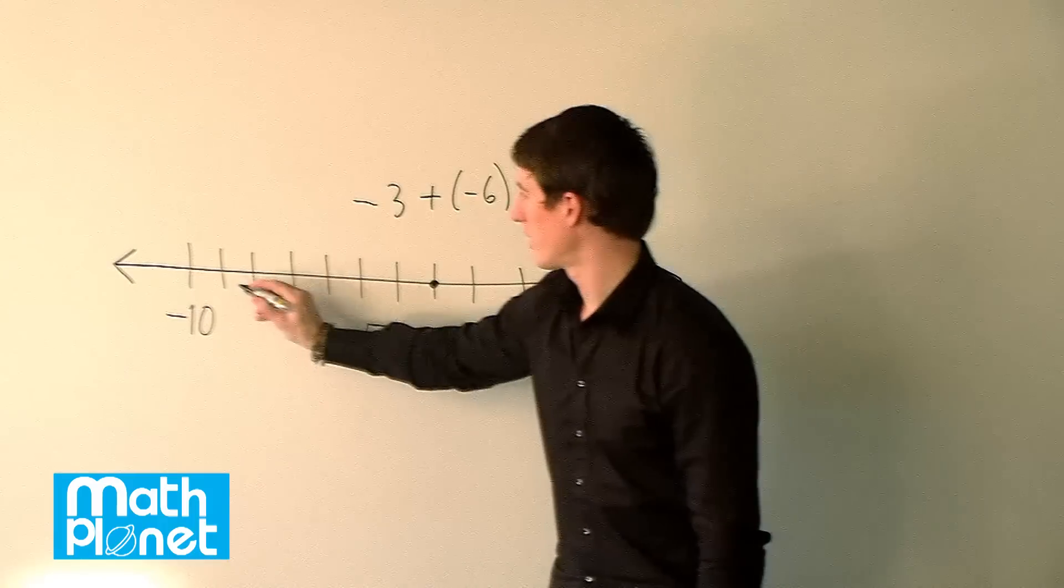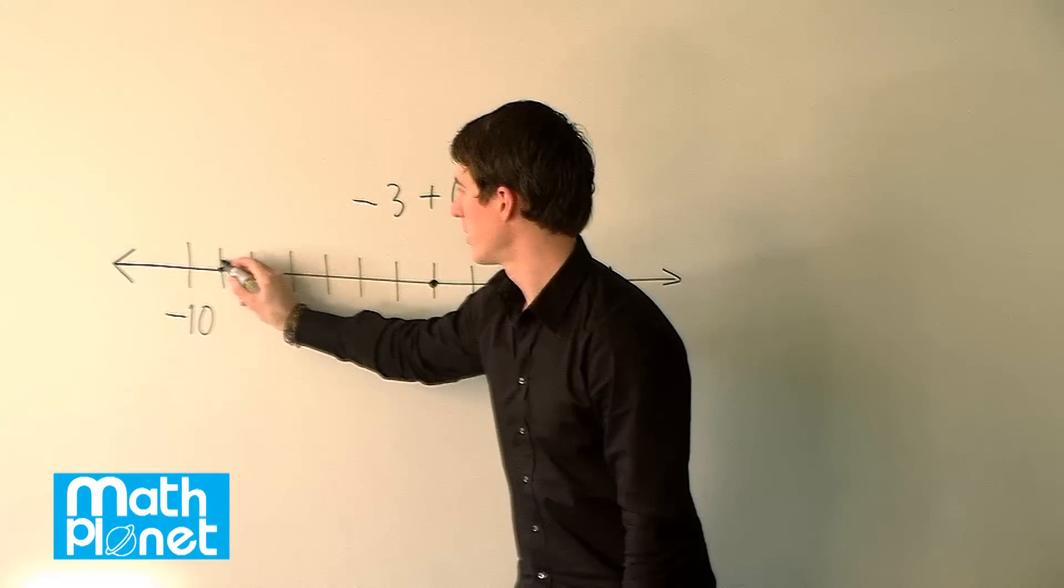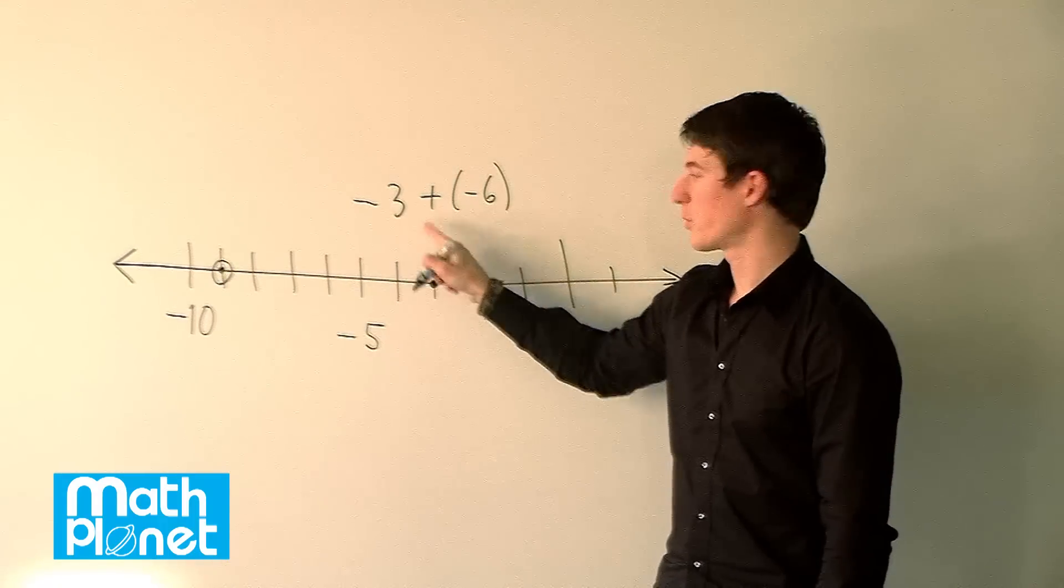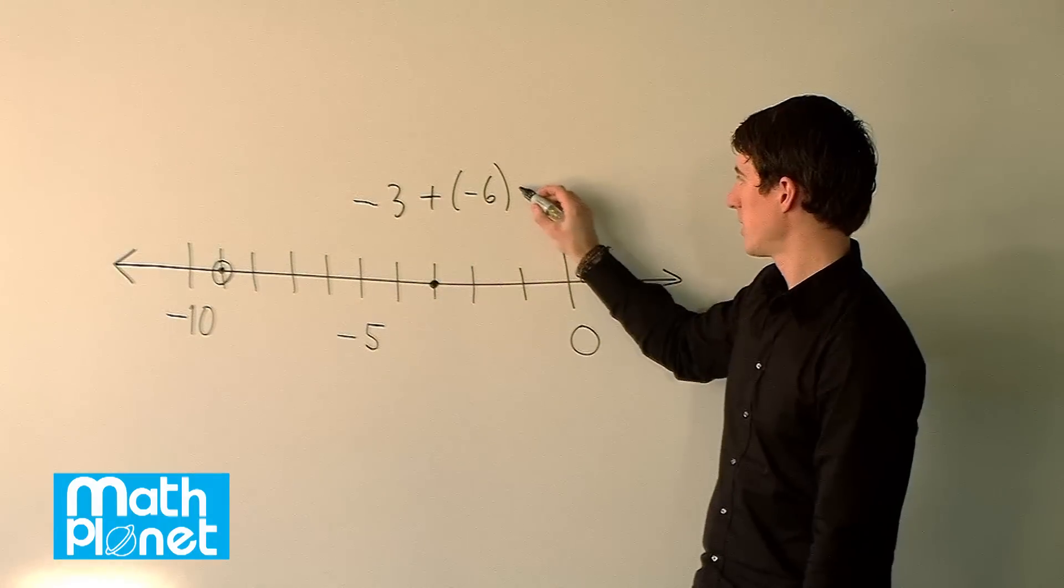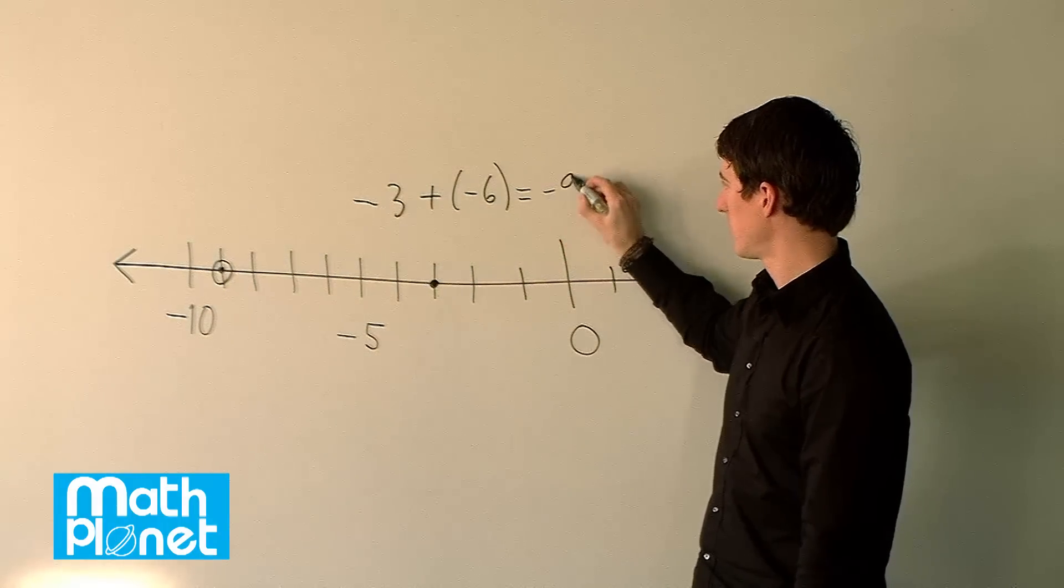Where does that leave us? That leaves us at negative 9. So there's our answer right there. From here, we can see from the number line that negative 3 plus negative 6 is the same as negative 9.